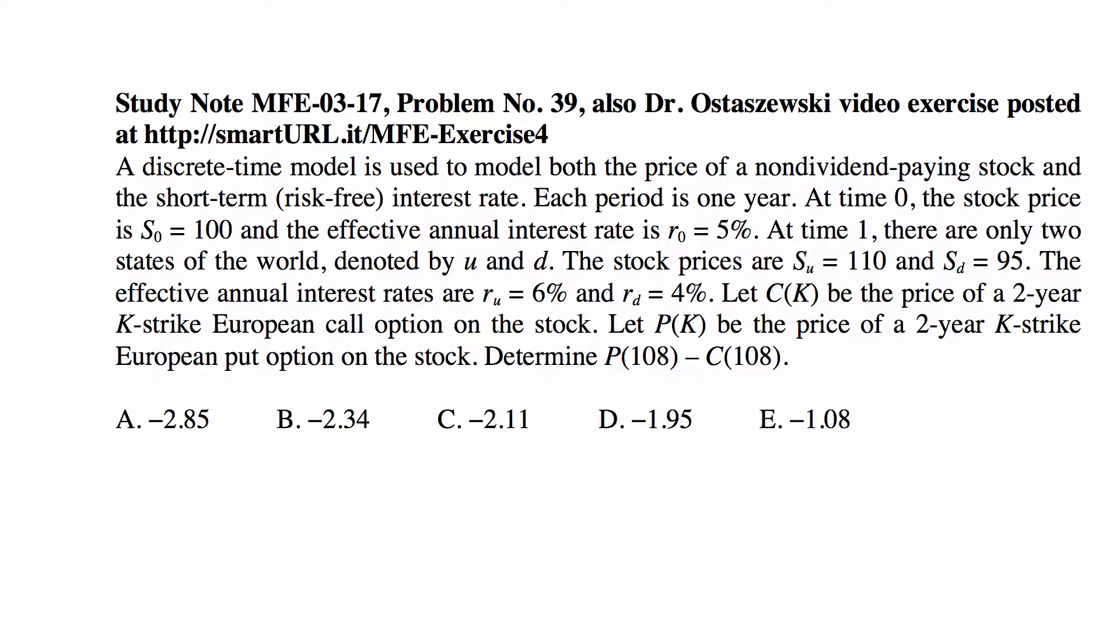The effective annual interest rates are then at time one r_u = 6% and r_d = 4%. So these are prices interest rates in two states of the world and these are again effective annual interest rates.